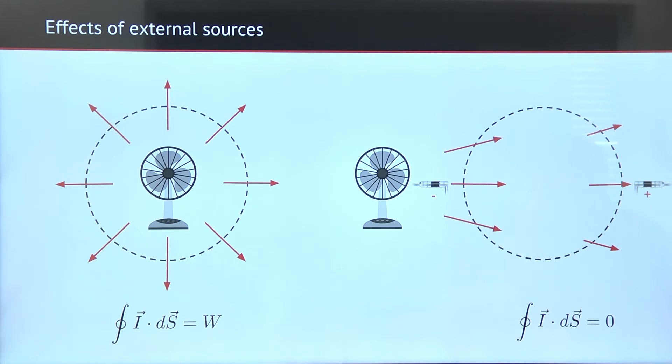If the sound source is outside, the partial sound power contributions on one side of the surface are positive and on the other they are negative. Therefore, the net contribution to the total sound power of the outside source equals zero.